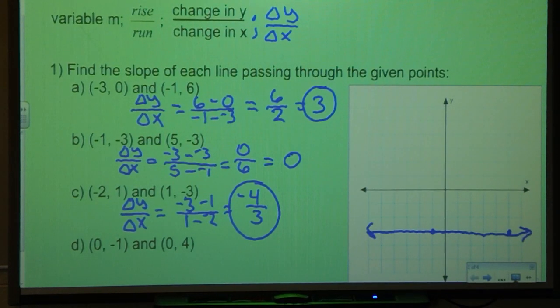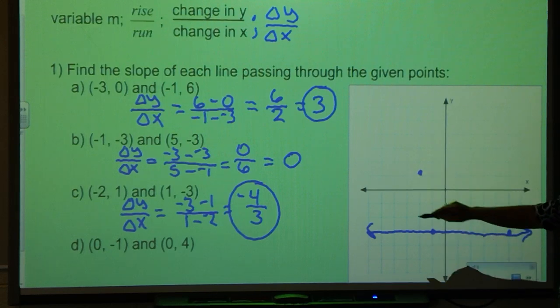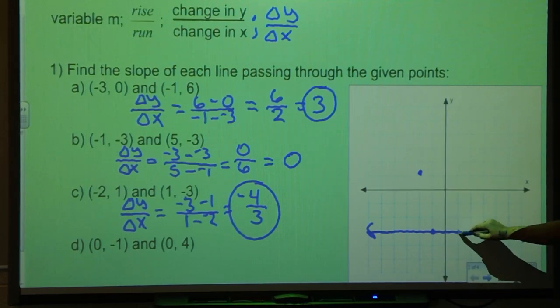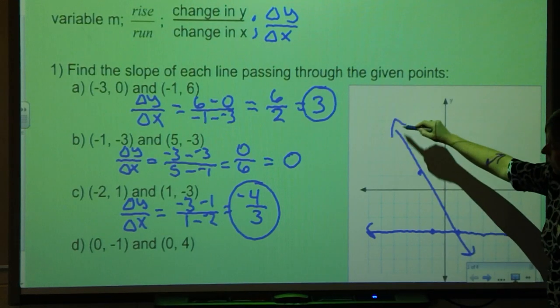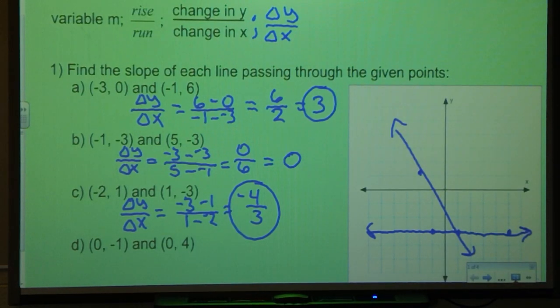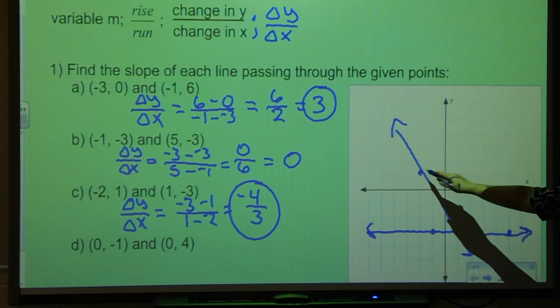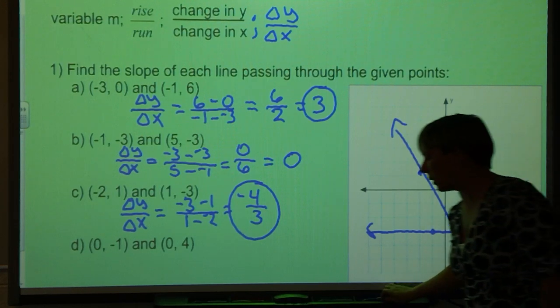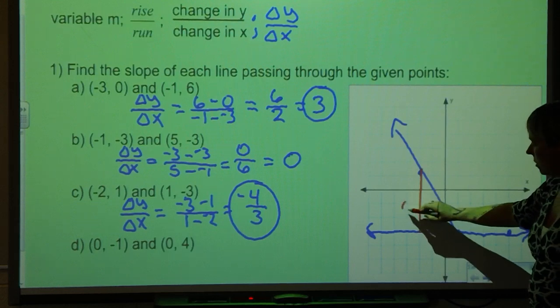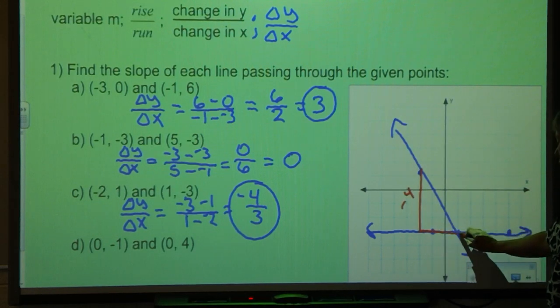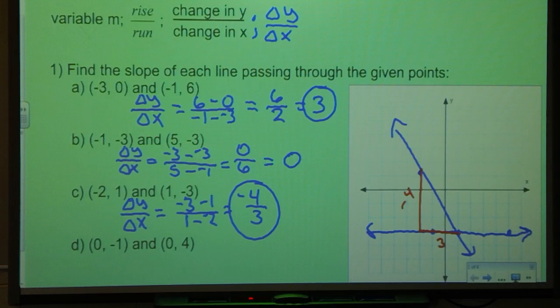If I'm graphing that on my coordinate plane I would have (-2, 1) and (1, -3). I would have this line here. And just like you remembered from last year I could take those two points and count my rise and my run and I would still get my slope. So if I'm going from this point to this point I would be dropping down 4 and then going over 3 to get to that next point which gives me my slope of -4/3.